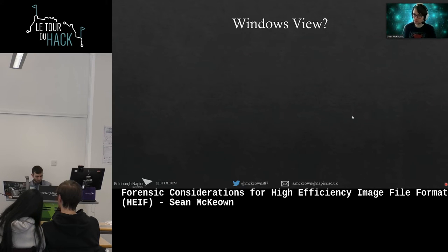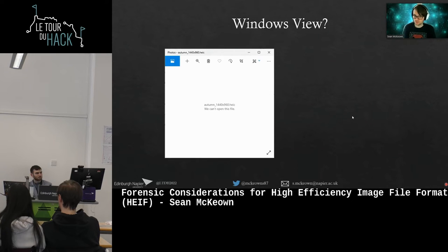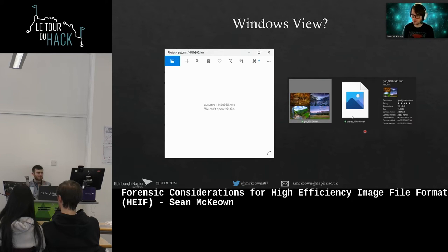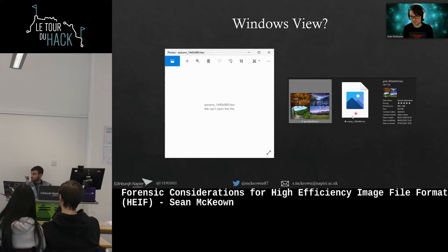On Windows, trying to open a HEIF image often results in the Photos application failing to display it. You might see the thumbnail rendering in Explorer, but not all derived image types display properly. Windows does support HEIF but not out of the box — there are paid plugins required and it's still a bit of a mess, even two years after writing the original paper. Android supports it too, but again without that full support we'd hope for.